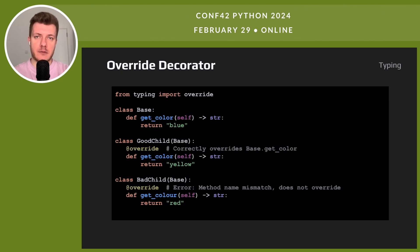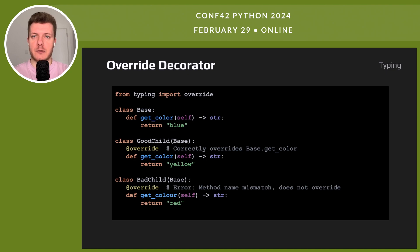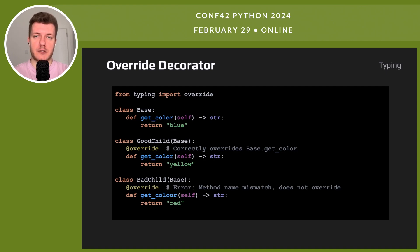PEP 698 introduces typing.override — a new decorator for static typing. It marks methods that should override superclass methods, helping catch discrepancies earlier. Before, method mismatches — wrong types and method names — could go unnoticed. The override decorator acts as a safeguard, ensuring our overrides are intentional and correct. This boosts code reliability and maintainability.